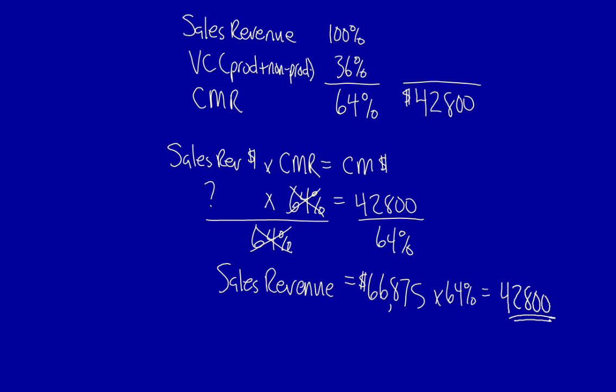No matter what you are given, if you have any piece of information such as the variable cost ratio or the Contribution Margin Ratio, you can calculate for the unknown number. Let's move on to the next part of the question.